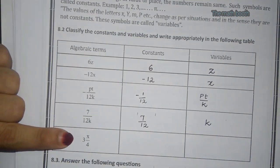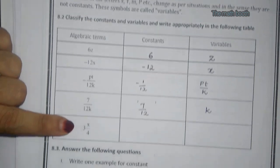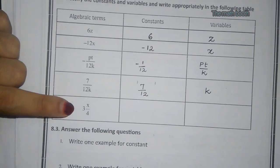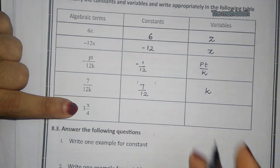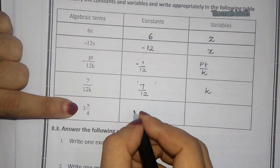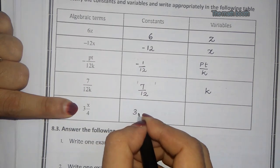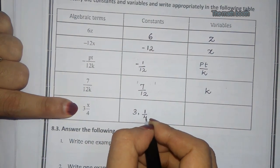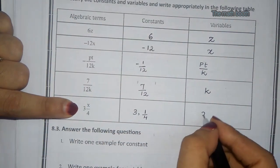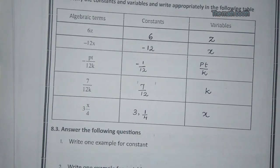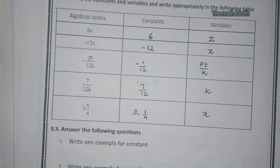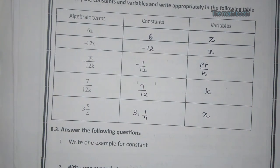For the next term, 3 and 1/4 is the constant and x is the variable. So this covers the classification of constants and variables from the given algebraic terms.